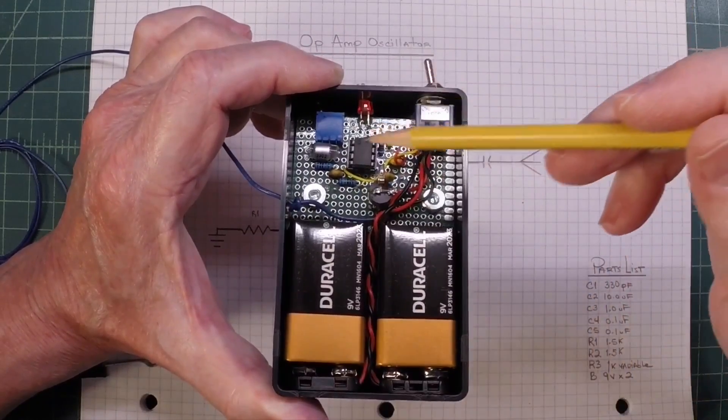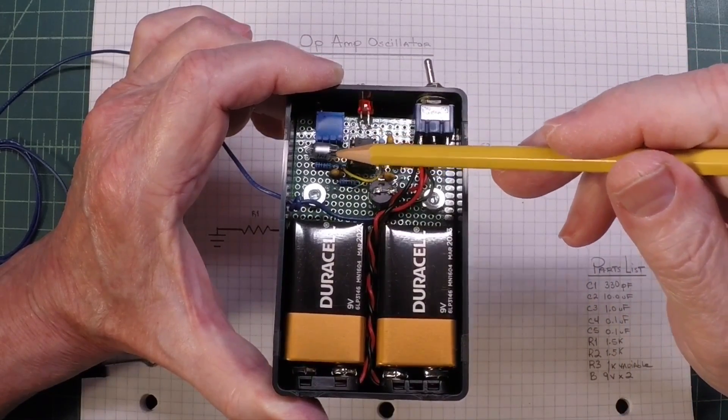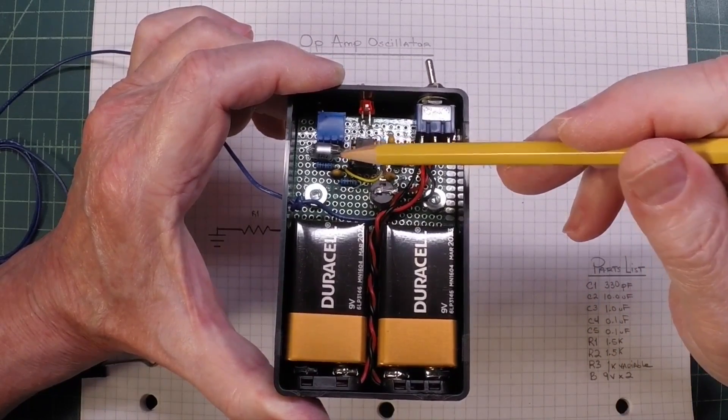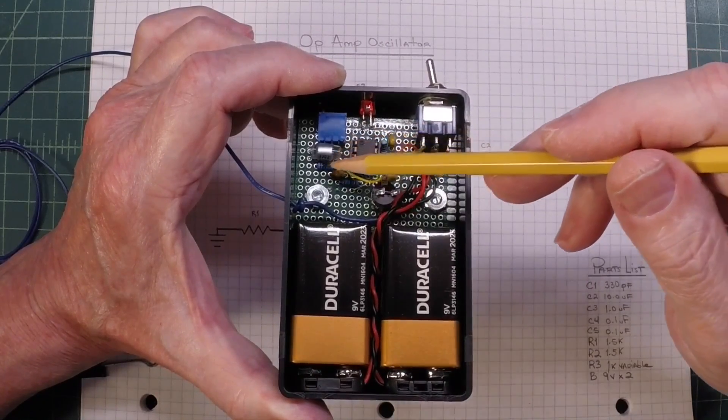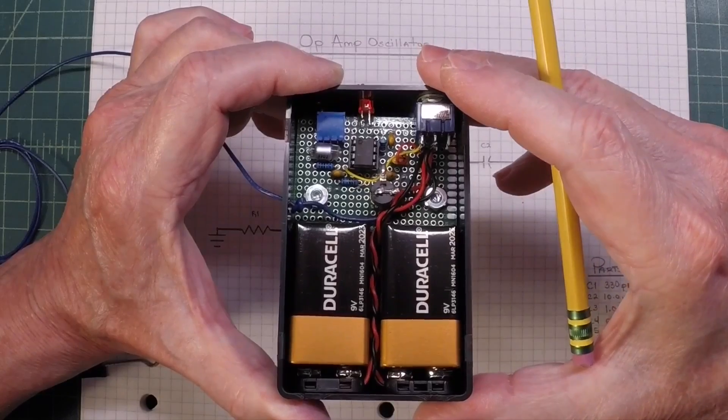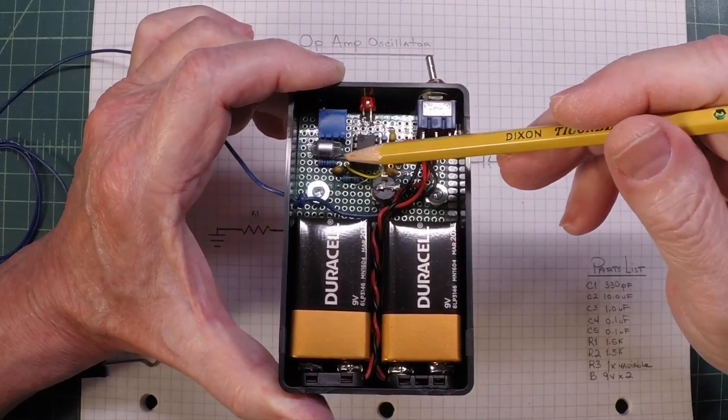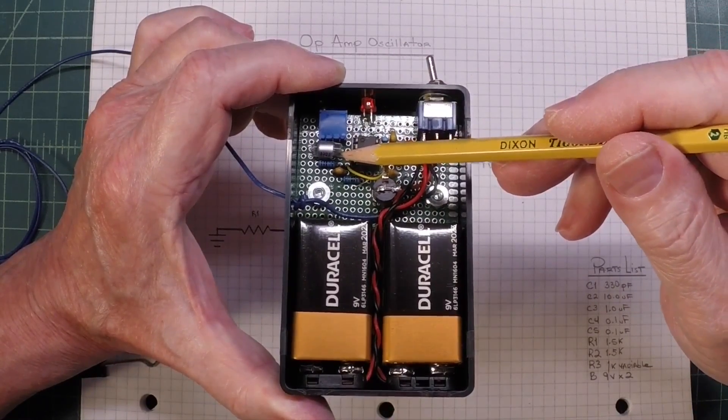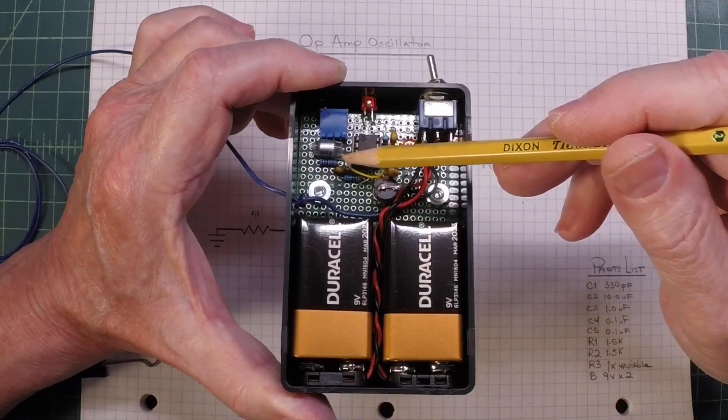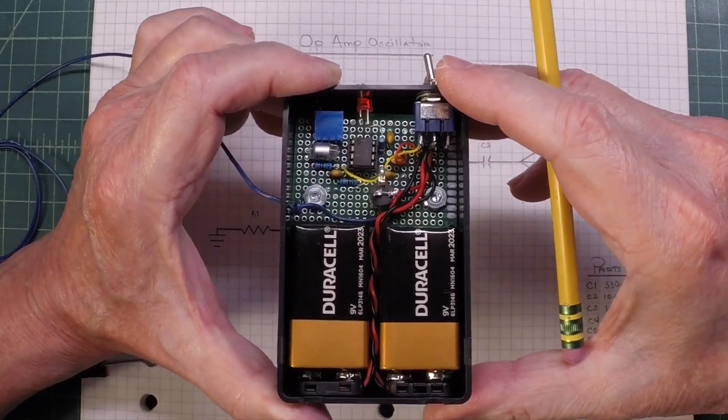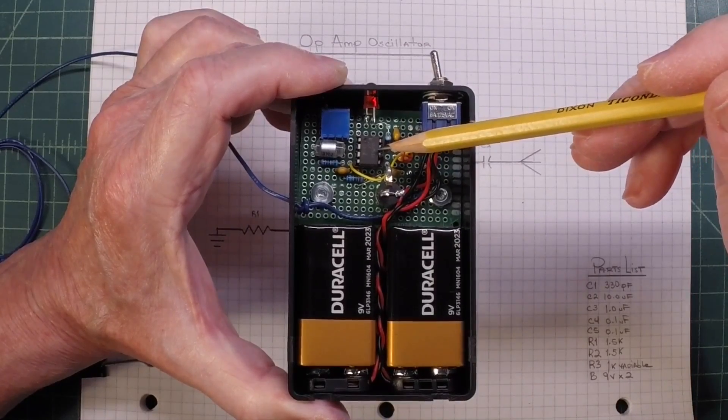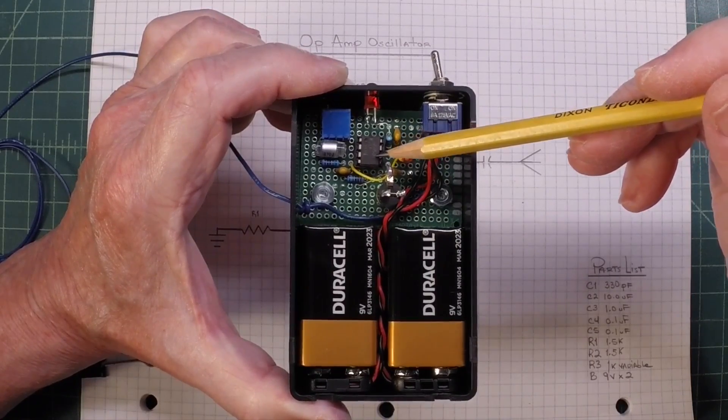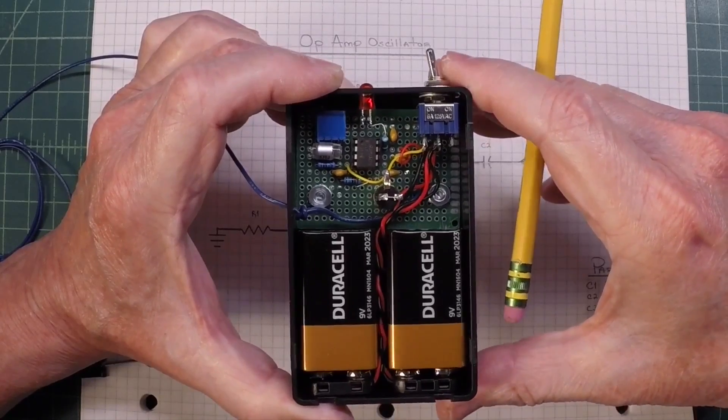I needed more capacitance, but there's stray capacitance here just due to the wiring and using this particular board, so less capacitance was needed than what was called for in the design, which was expected. Again, I mentioned the JFET op amp that I elected to use.